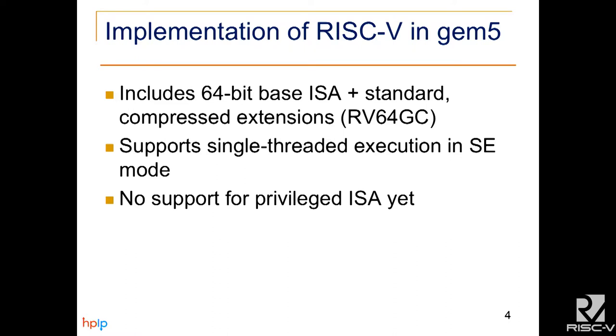I brought this functionality to RISC-V, including the 64-bit base ISA and the standard and compressed extensions, or RV64IMAFDC, also known as GC. This is currently limited to single-threaded execution with system call emulation, and so it does not have any support for the privileged ISA, because with system call emulation only user-level code is run and privileged code is offloaded to the host system.